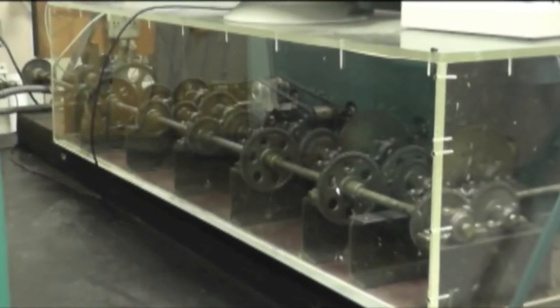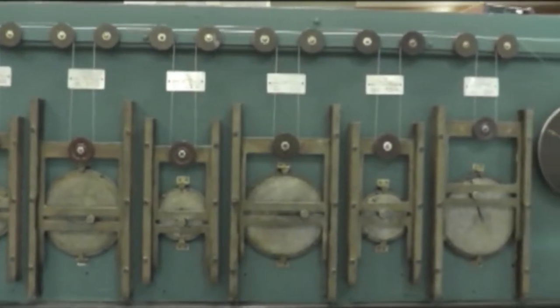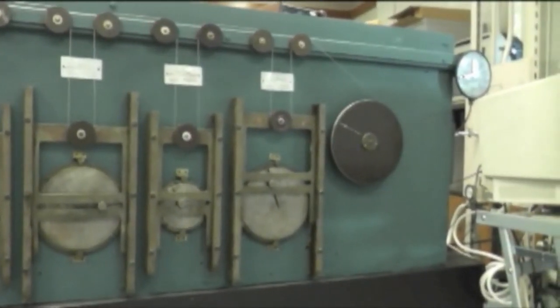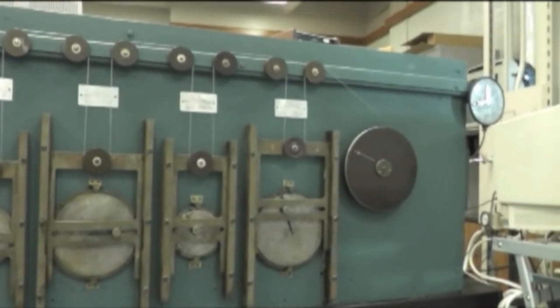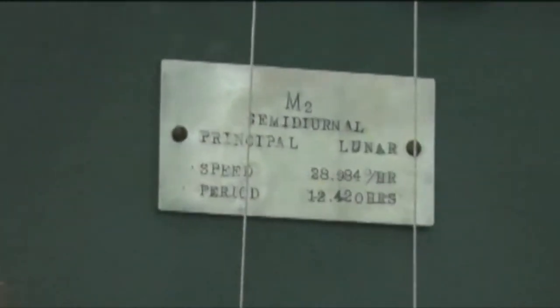the plunger motions were controlled by a series of gears and pulleys. The different sizes and rotation rates of the pulleys, as they guided the cable, simulated the changing effects of the sun's and moon's gravity on the waters of the sound.